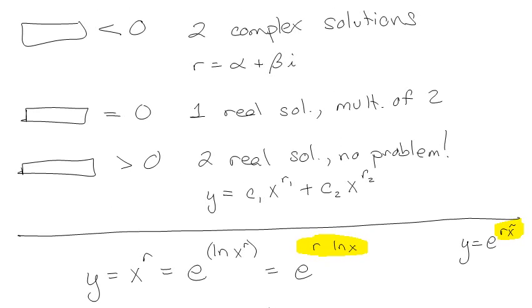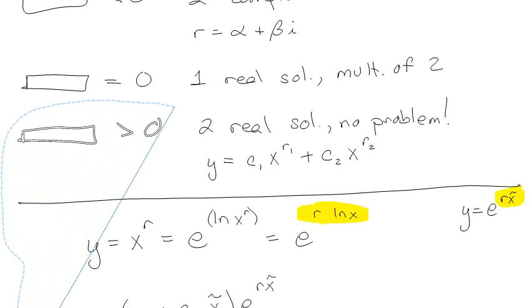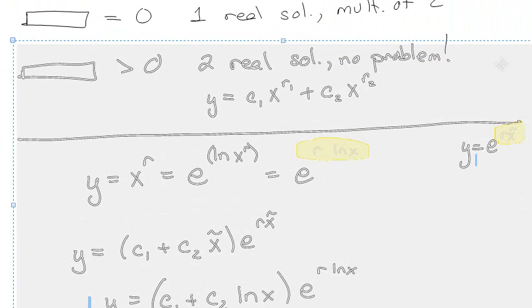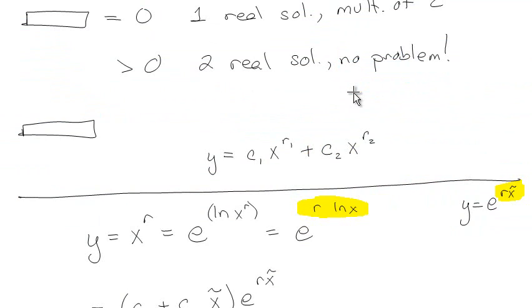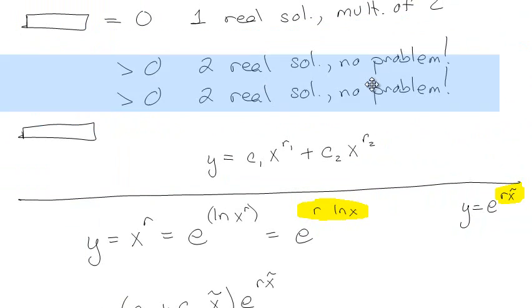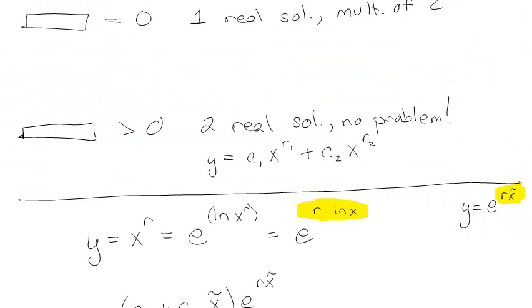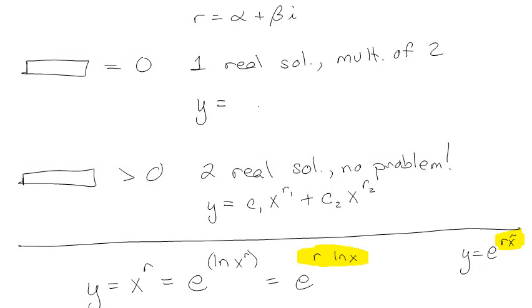So what that means is if we have a situation where we have one real solution with a multiplicity of 2, then what we're going to do is guess that y equals (c1 plus c2 natural log of x) times x to the r.